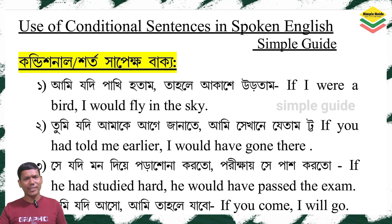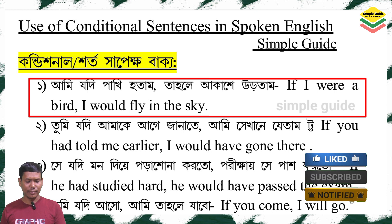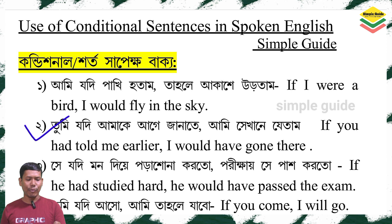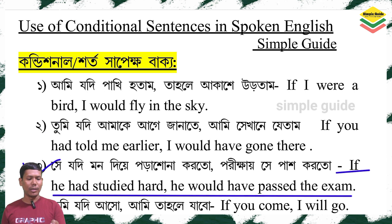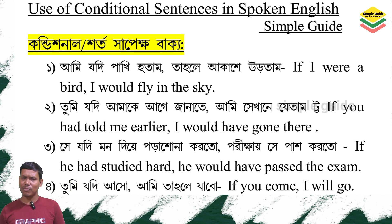Just look at these sentences. 'If I were a bird, I would fly in the sky.' 'If you had told me earlier, I would have gone there.' 'If you had studied hard, he would have passed the exam.' 'If you come, I will go.' All these sentences are dealing with conditions — some with possible conditions, some probable, some impossible.